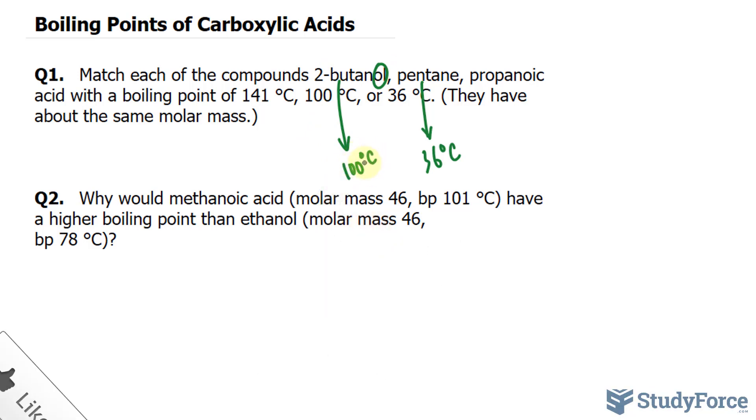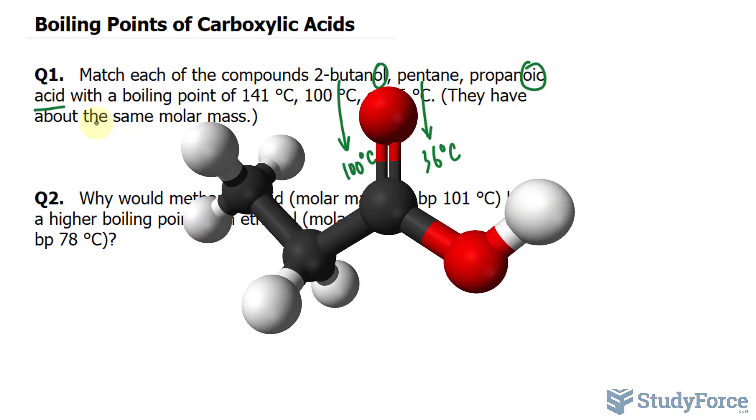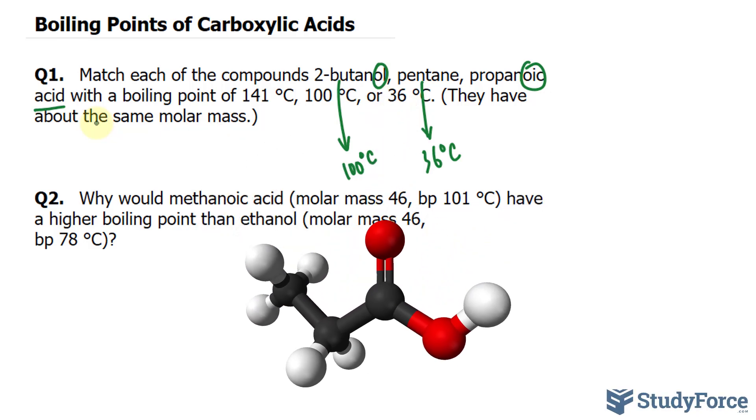Lastly, propanoic acid is a carboxylic acid, and I know that because of OIC and the acid word after the name. Carboxylic acids, unlike alcohols and alkanes, have the highest boiling point.